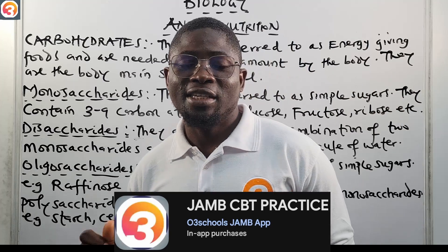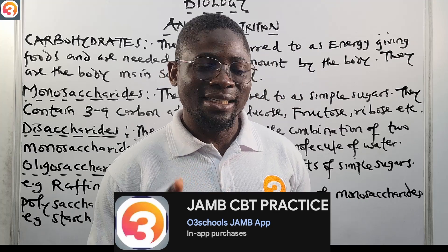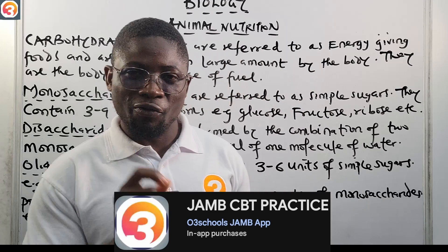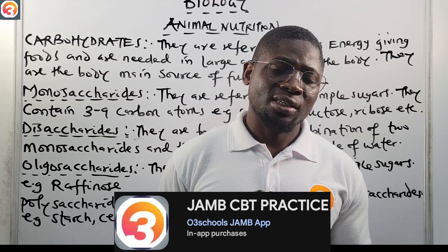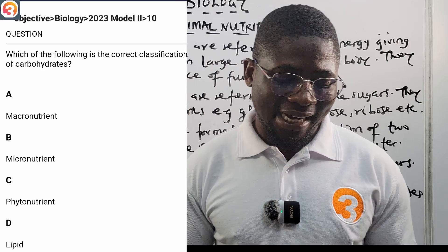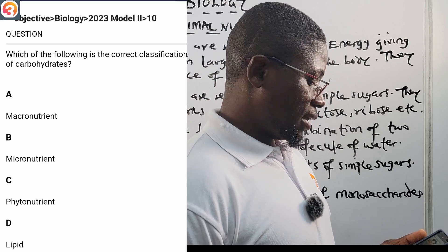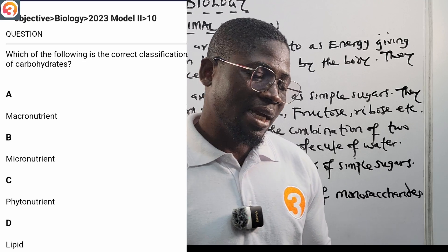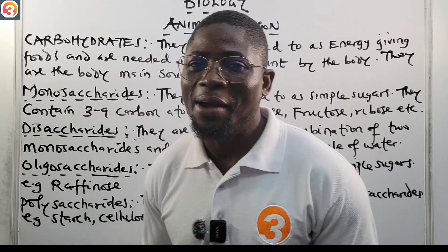These tutorials are brought to you by the O3 School JAMB CBT Practice App, for students who want to pass their exam at once. We'll talk about the app in a moment, but first let us check a question from the application — a 2023 JAMB past question, number 10: which of the following is the correct classification of carbohydrates? Options are: A) macronutrients, B) micronutrients, C) phytonutrients, D) lipid. We'll come back to this question shortly.